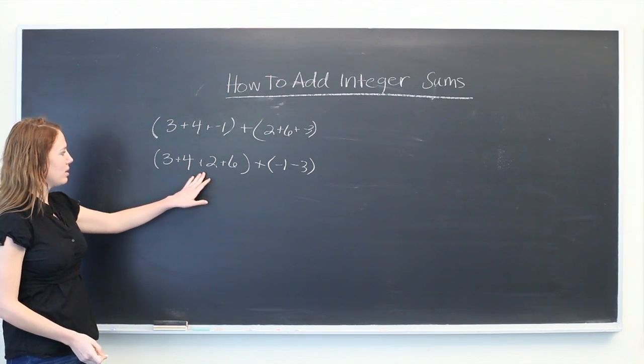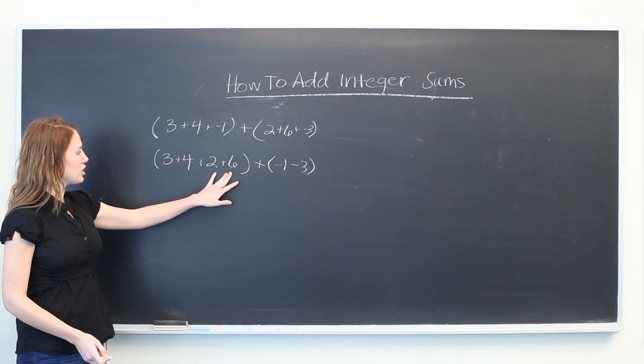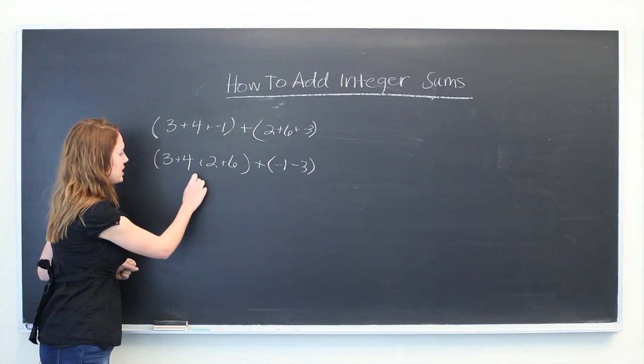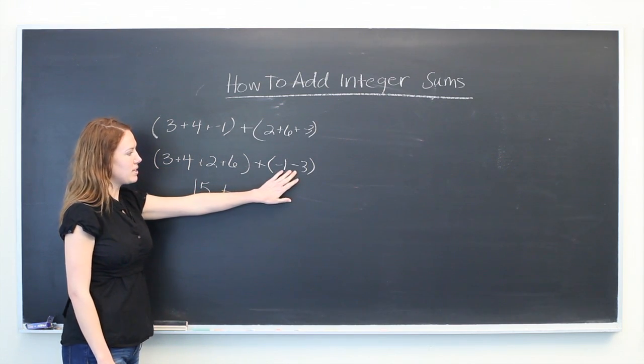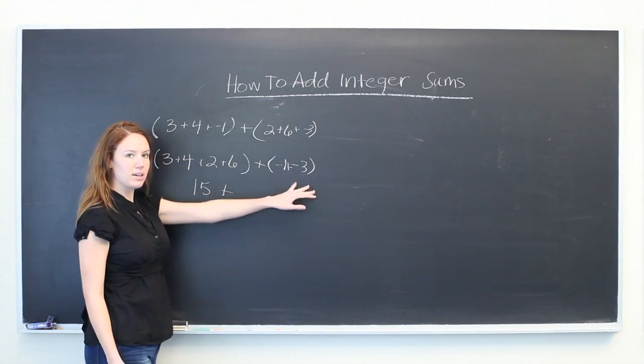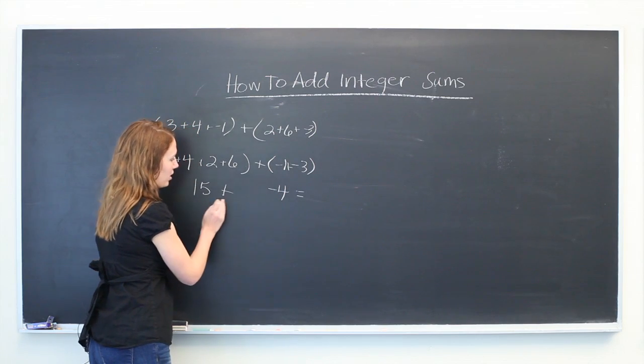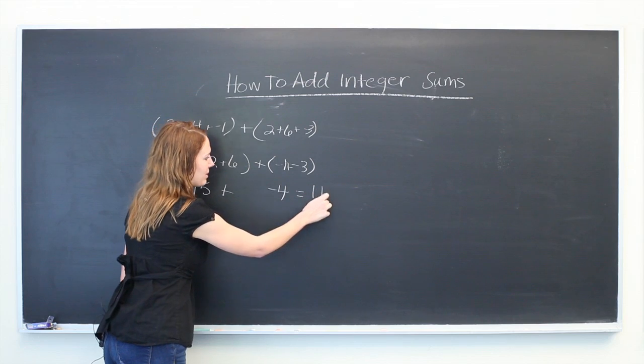We know that 3+4+2+6 should give us 7+8, which is 15. Plus (-1) added with (-3) will give us (-4). Our answer will be 15+(-4), which is 11.